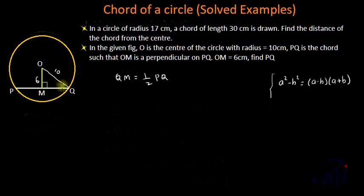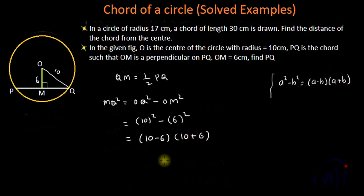Again we have OMQ as a right angle triangle. So I can write MQ whole square is equal to OQ whole square minus OM whole square. If you substitute the values, it will become 10 square minus 6 square, or you can write it as 10 minus 6 multiplied by 10 plus 6 using this identity. This will become 4 multiplied by 16. MQ square is 64, or if I take the square root, the square root of 4 is 2 and the square root of 16 is 4. So MQ is equal to 8 centimeters.